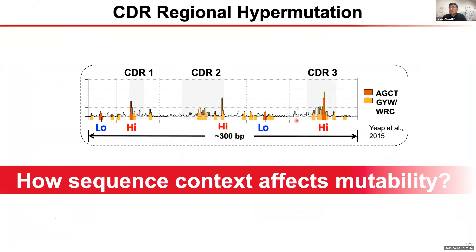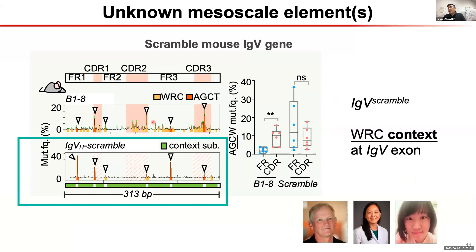We asked why this sequence context could affect mutability — if the same motif is in CDR it is highly mutated, but if we put it in a framework region it is mutated at low frequency. Long ago we started studying this question with mouse models. We generated scrambled mouse antibody genes, keeping some motifs but scrambling other sequences, and you can see the high-low-high feature is completely lost. This genetically suggested that sequence context plays an important role in mutation signatures.